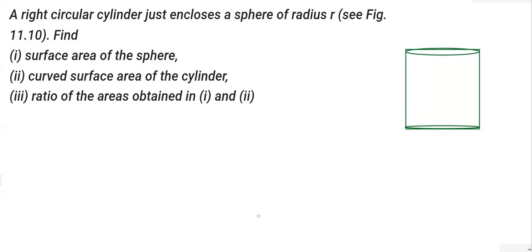It has been made in such a way that it just encloses a sphere. That means the sphere is such that its side touches the walls of this cylinder. That means we conclude that whatever is the radius or whatever is the diameter of this sphere will be the diameter of the cylinder. So we can write the radius here.